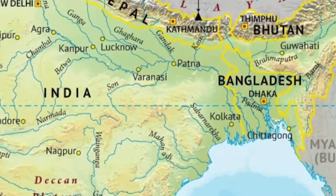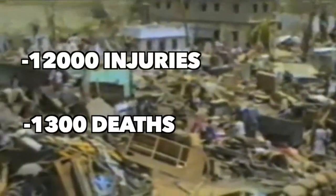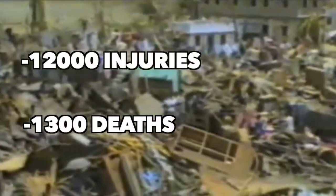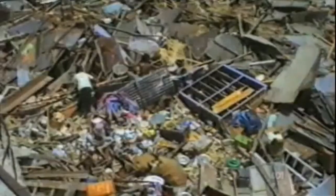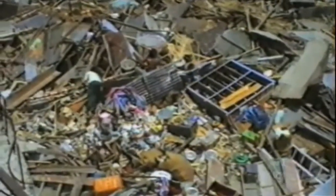In 1989, the deadliest tornado of all time hit this region of Bangladesh and resulted in 1,200 injuries and 1,300 deaths. How could a tornado cause this much devastation? Well, let's find out.